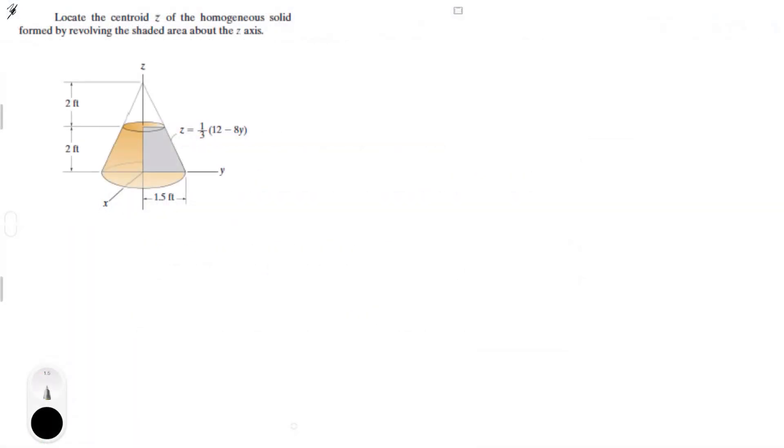Alright guys, let's do this problem that says locate the centroid C bar of the homogeneous solid formed by revolving the shaded area around the C axis. This problem is actually pretty simple to set up, it's just a long integral you gotta do in the end, but it's just simple math or simple calculus.